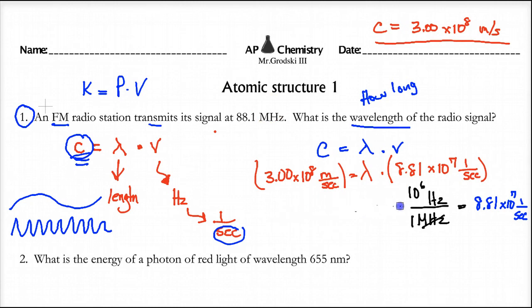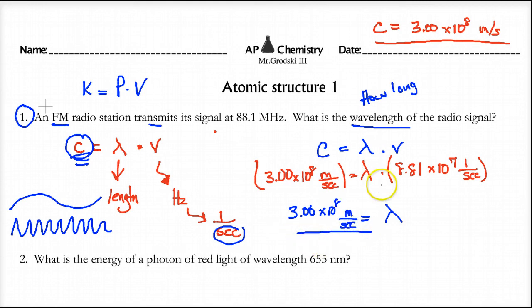Equals lambda times the frequency. The frequency we just found is 8.81 times 10 to the 7, that's a per second, that's a hertz. Now all we got to do is solve for lambda. And what you're going to have here is lambda is equal to the speed of light, 3.00 times 10 to the 8 meters per second, over the frequency, which is 8.81 times 10 to the 7, 1 over second. And if you look carefully, you'll see that this second will cancel, and you're left with meter, which is a distance, which is what we talked about.